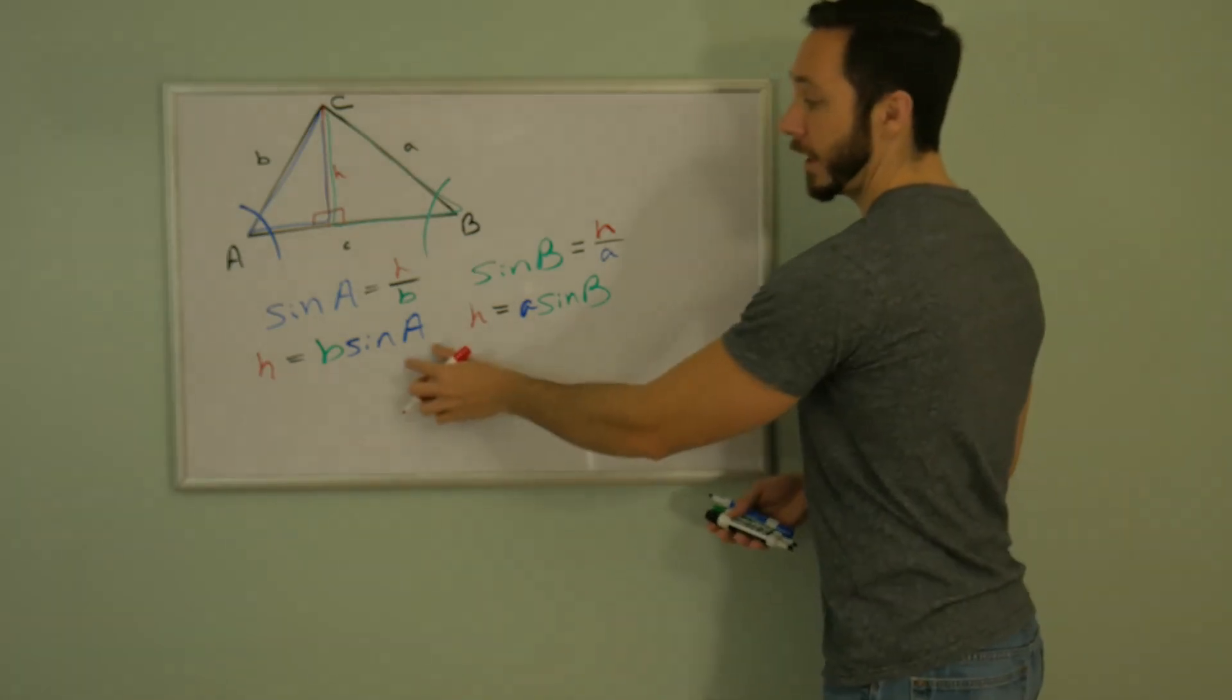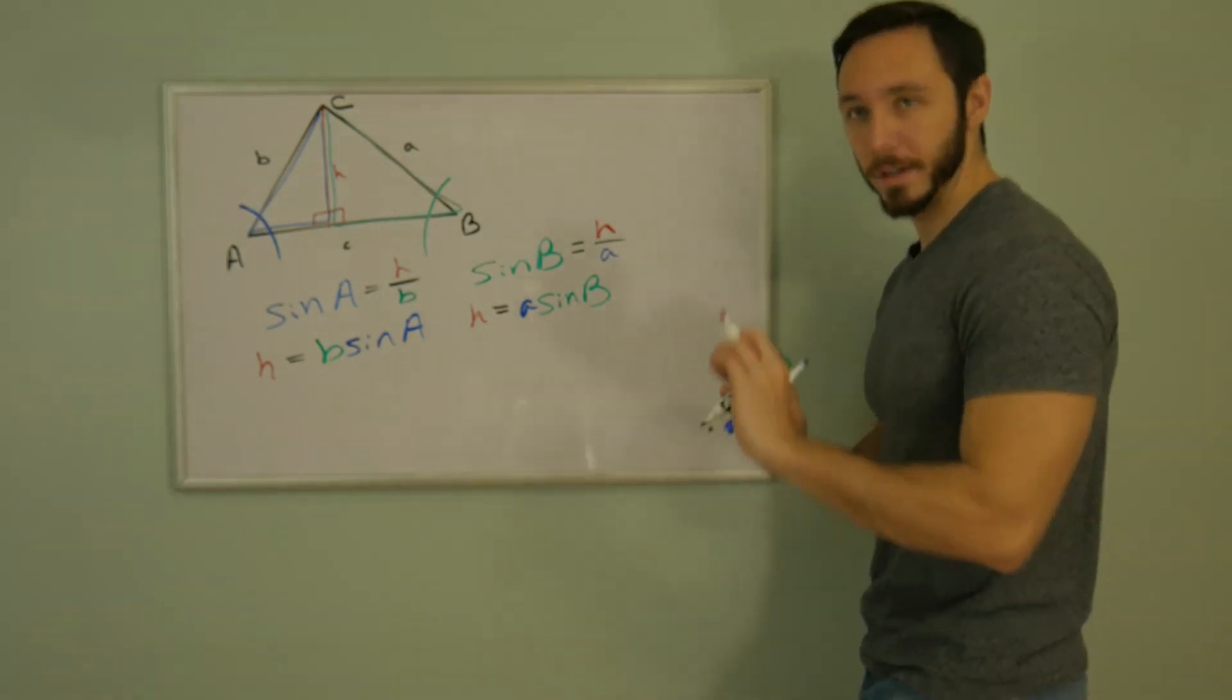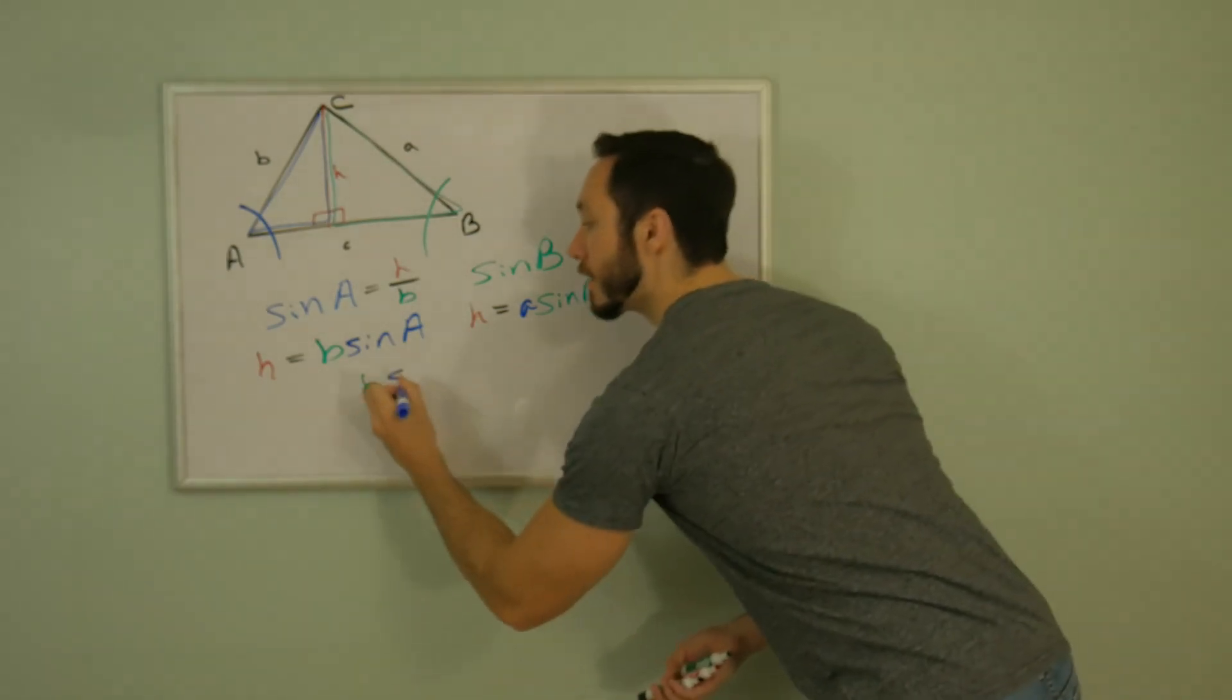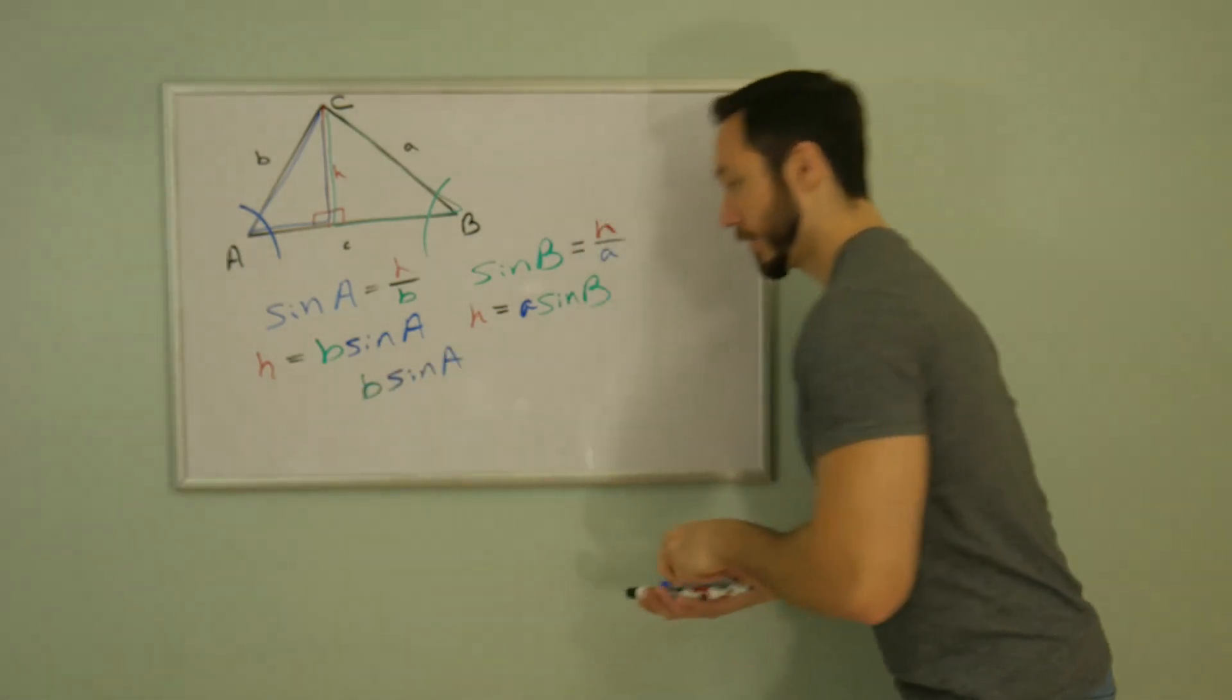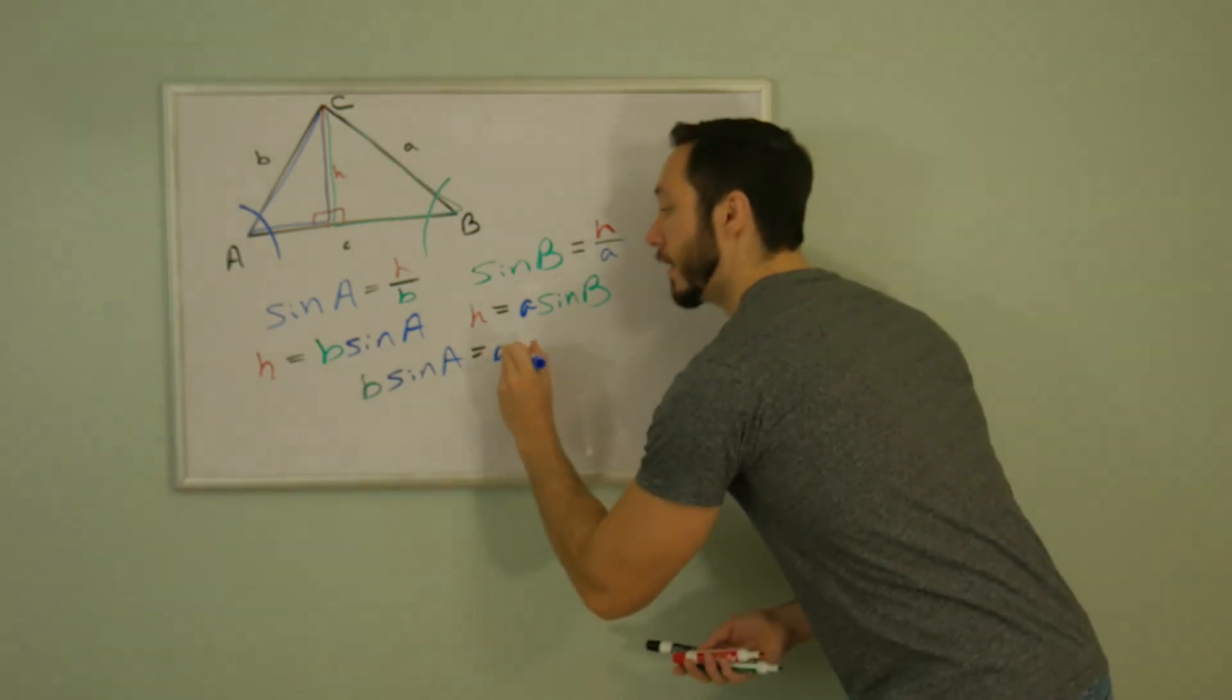I know that H is equal to B sine angle A, and H is also equal to A sine angle B. Let's set them equal to one another. So I got that B sine angle A, setting that equal to A sine angle B.